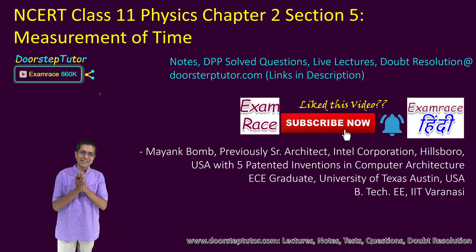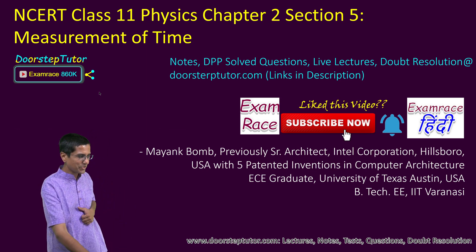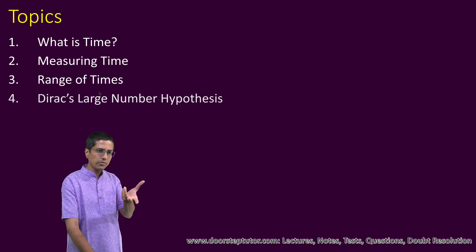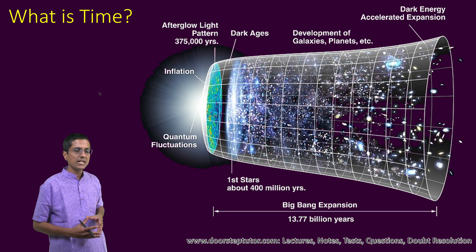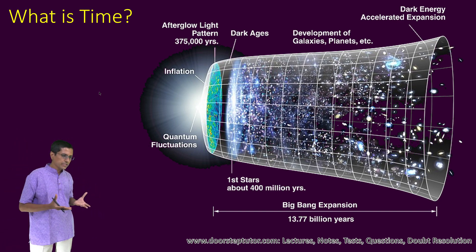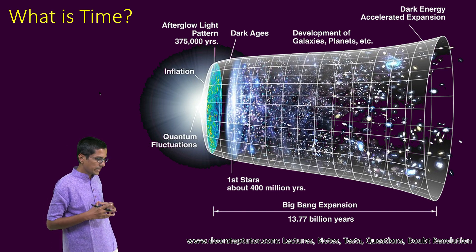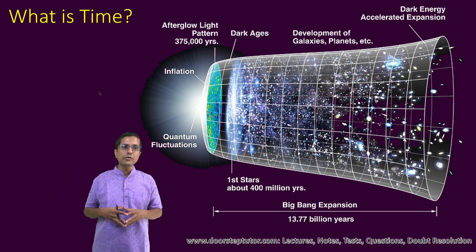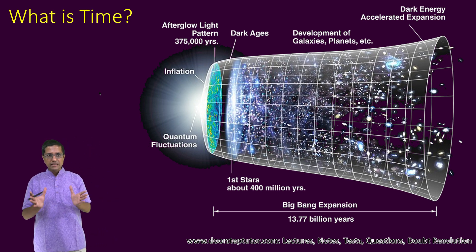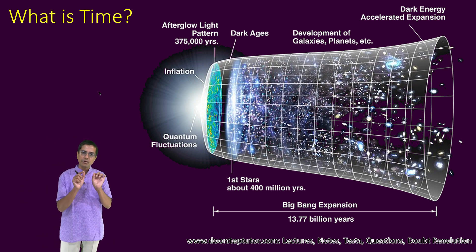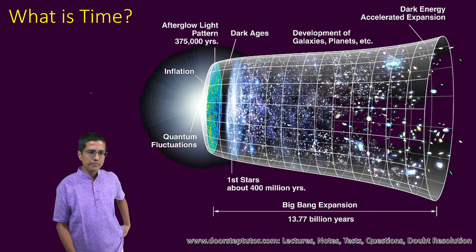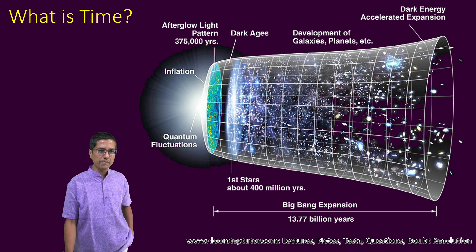Now we come to an interesting section: the measurement of time. Before delving into how to measure time, let's understand what time actually is. The concept of time comes from the observation of changes. If I observe a change, then I am defining the concept of time — if something changes, I can say that it changed over a period of time. For example, here we have the universe which started from the Big Bang.